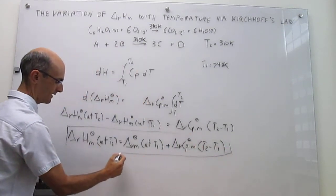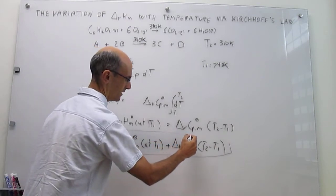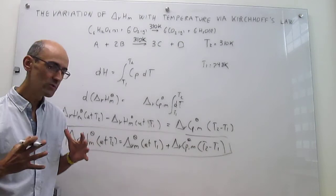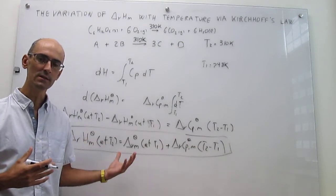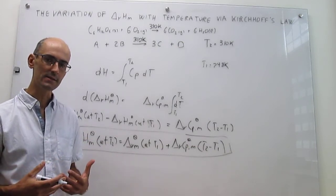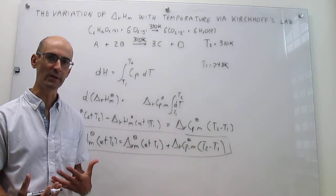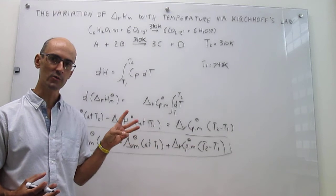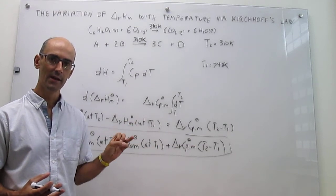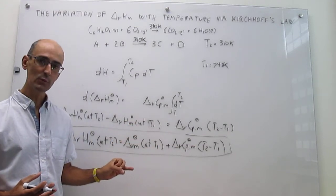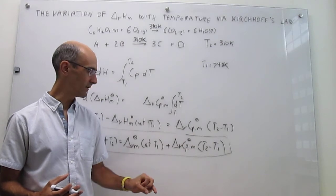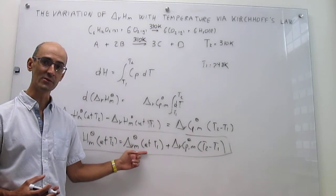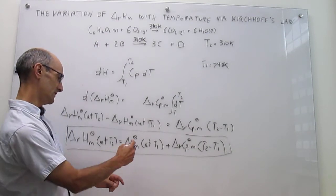That is Kirchhoff's law integrated, assuming the heat capacities do not depend on temperature. I want to emphasize that proceeding this way is exactly the same as what we did in the last video with the thermodynamic cycle. The last video had three steps: cooling reagents, reaction at 298 Kelvin, and then heating products. Steps 1 and 3 — cooling reagents and heating products — are condensed into the ΔCp°_rxn × ΔT term, and step 2 is simply the reaction at 298 Kelvin.